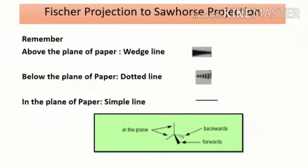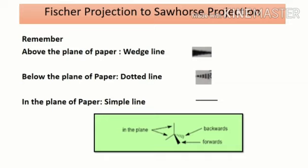In the flying wedge formula, the bonds which are above the plane of paper are shown by a wedge line, and the bonds which are below the plane of paper are shown by dotted lines. With this knowledge, we can convert the Fischer projection of 2,3-dichlorobutane to the flying wedge formula.